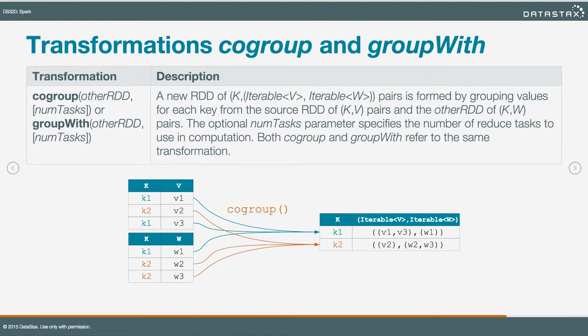Co-group, or its synonym group with, is a transformation you use on two RDDs if you want to group them by key and collect together the keys you find in one RDD with the keys you find in the other. We have two RDDs as input. When we co-group them, we take all of the unique values of K1 from the first RDD — that's V1 and V3 — and put them together in an iterable. Then we take all unique values of K1 from the second RDD and put them in an iterable. For K2, we get V2 and W2 and W3. I encourage you to pause the video, follow the lines on the slide, and make sure you understand the mapping happening here.